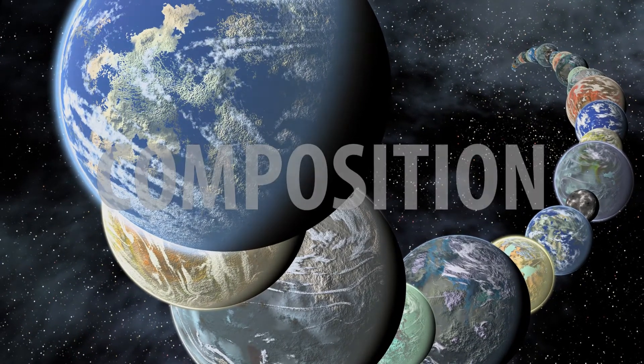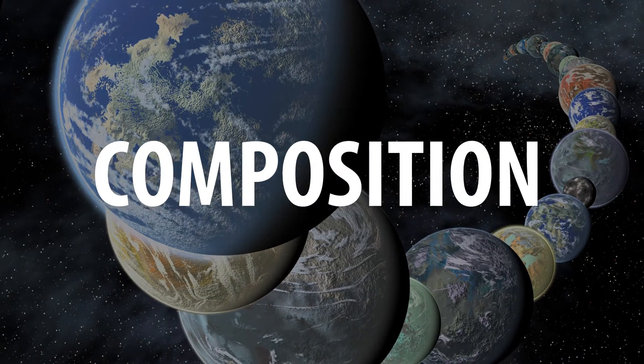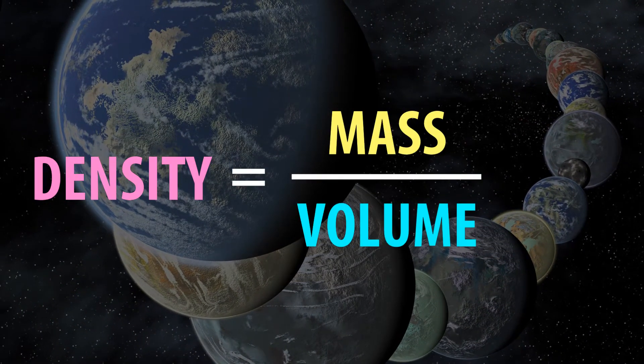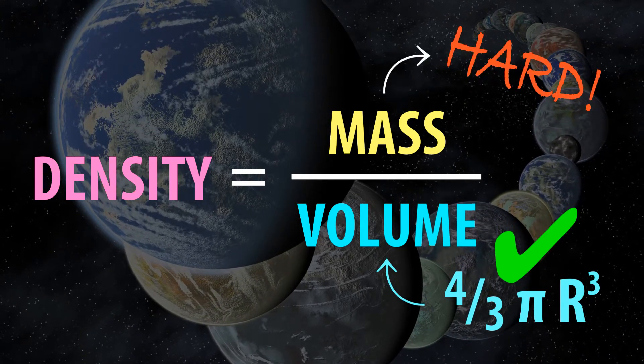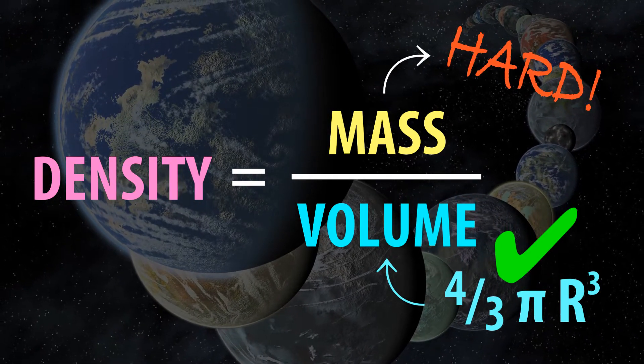But to understand what the planets are made of, we need to know their densities, which means we have to measure their masses very accurately. That's incredibly hard, but in the case of TRAPPIST-1, not impossible.